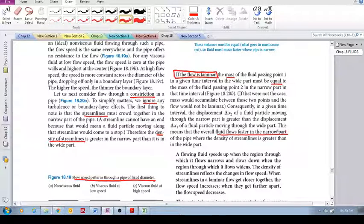A flowing fluid speeds up when the region through which it flows narrows and slows down when the region through which it flows widens. The density of streamlines reflects the changes in flow speed.